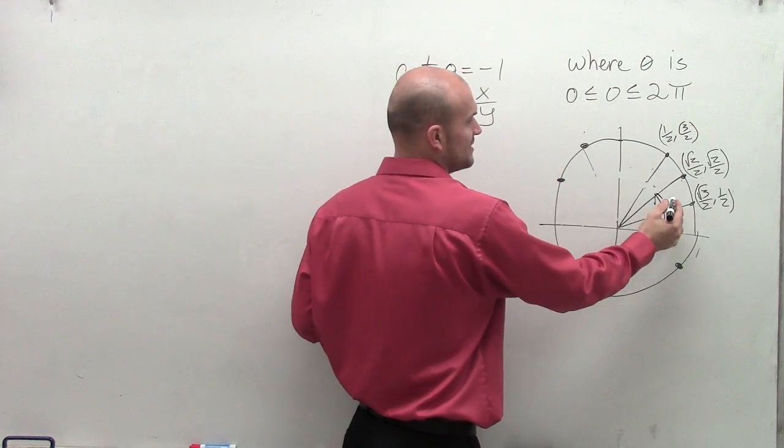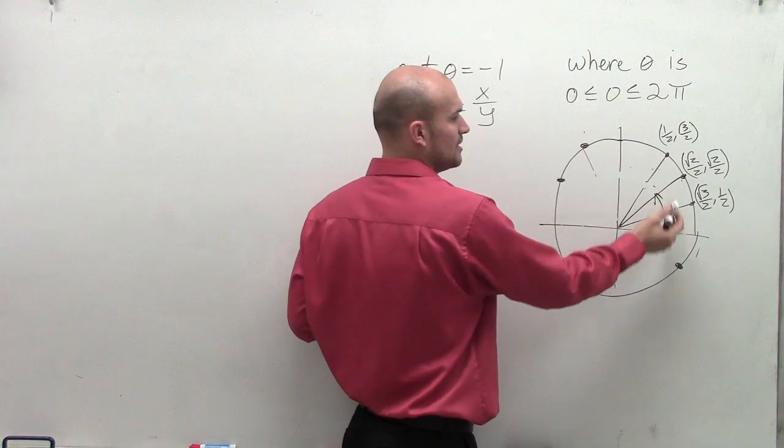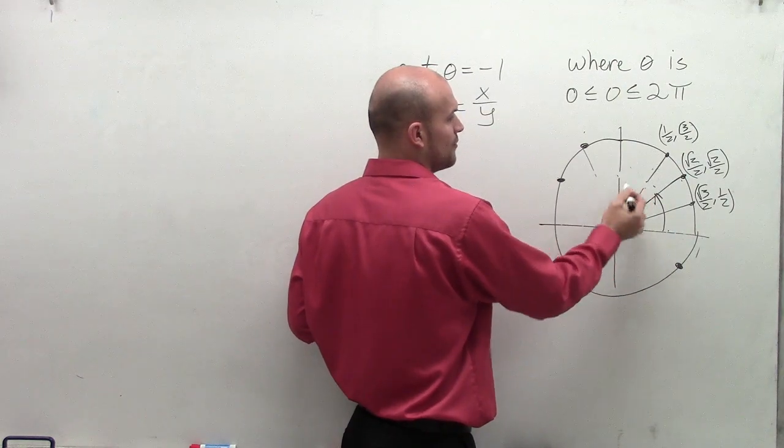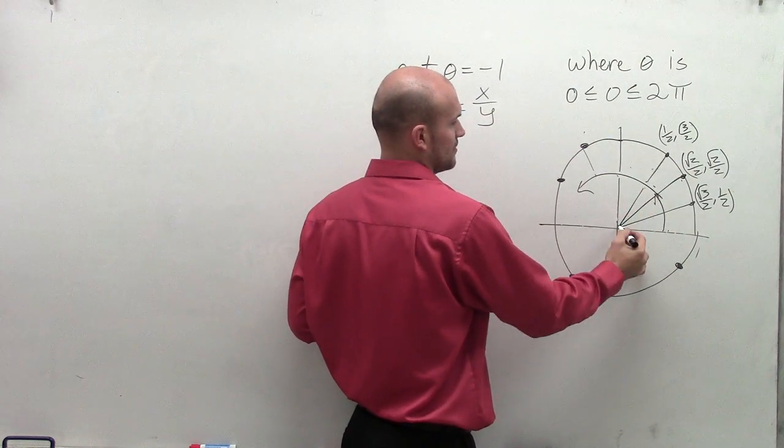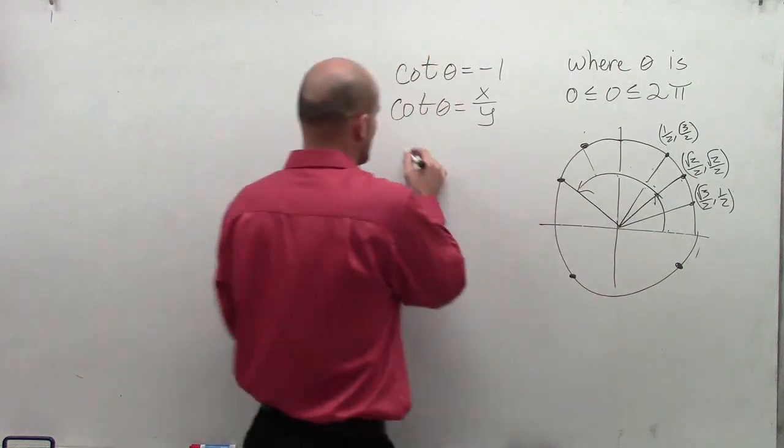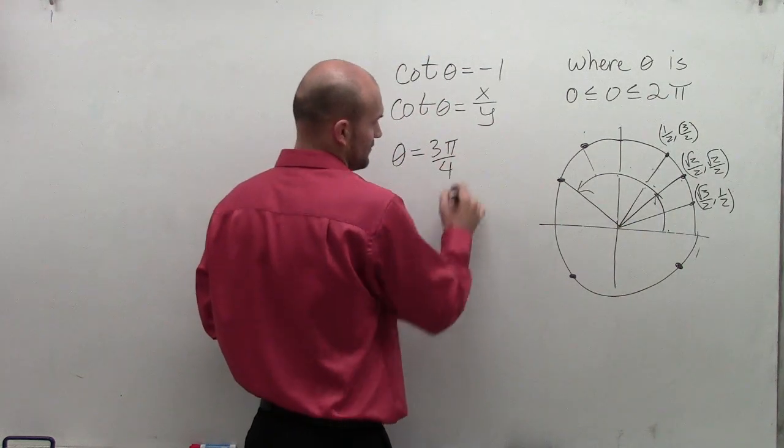Well, right here, this is the angle pi fourths. So if we look at pi fourths, 2 pi fourths, 3 pi fourths, would be this angle. So we could say theta is going to equal 3 pi over 4.